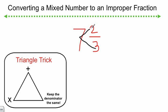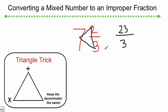Then we're going to add in the 2 on top, the extra 2 we have. So 3 times 7 was 21, and 21 plus 2 is 23. And we're going to keep the denominator the same, because when we're working with fractions, the denominator always tells us the whole — whether we're using a mixed number, an improper fraction, or a regular fraction, the denominator is always telling us the whole. So it never changes.